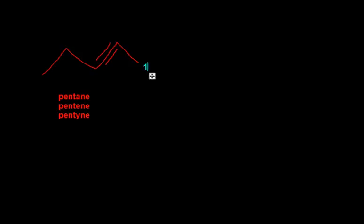Let's get to naming this one. Start numbering from the lowest carbon: 1, 2, 3, 4, 5. This is where the alkyne starts. So this is going to be a 2-pentyne.